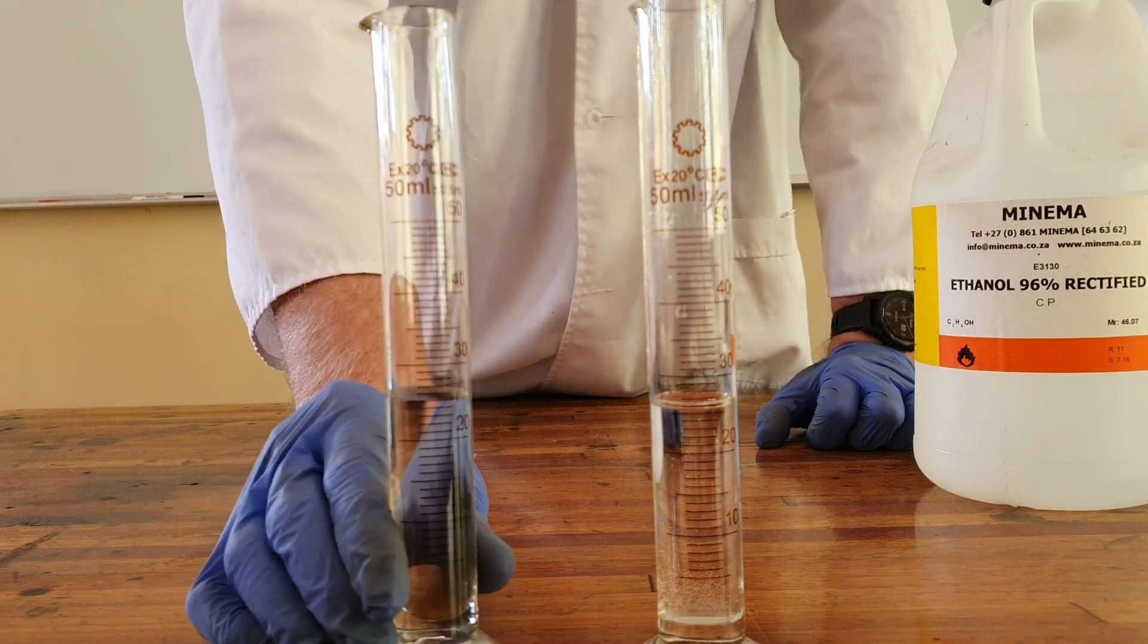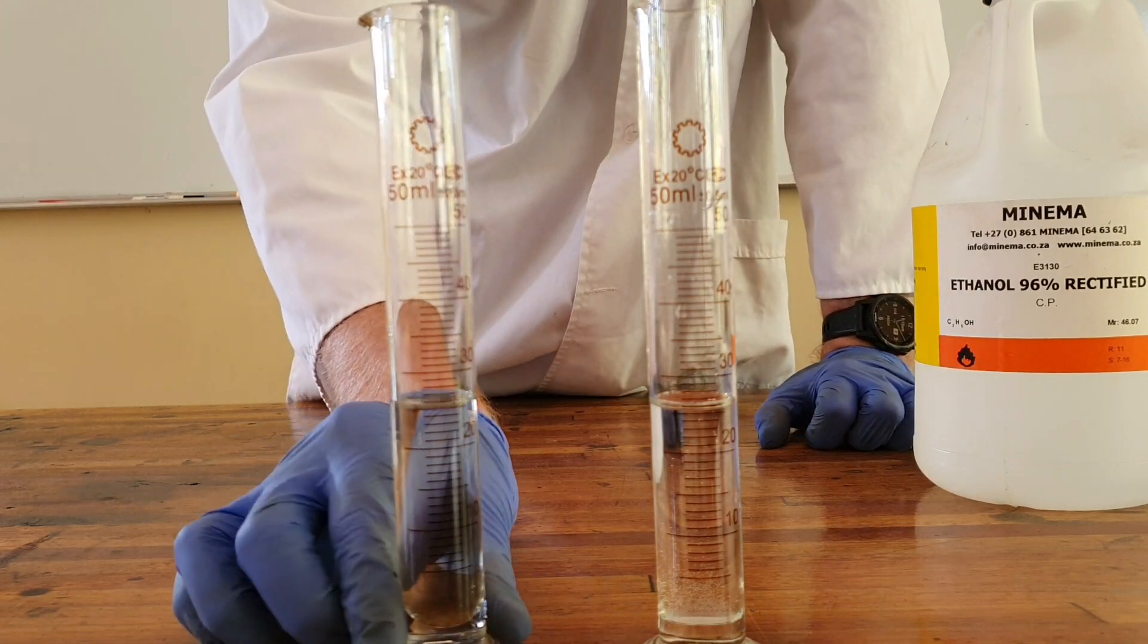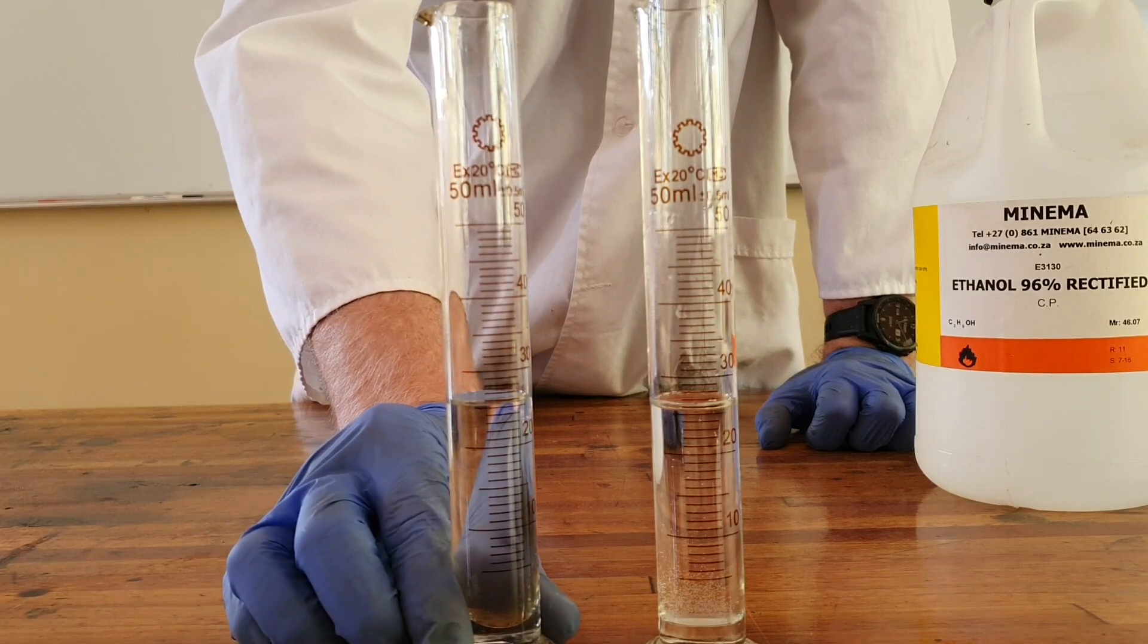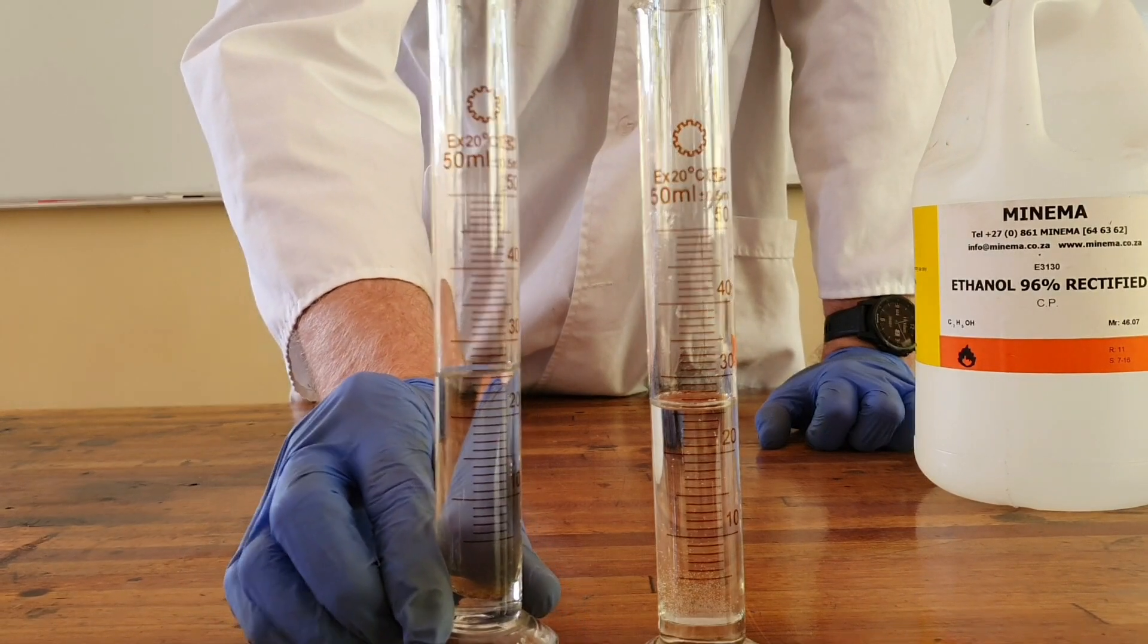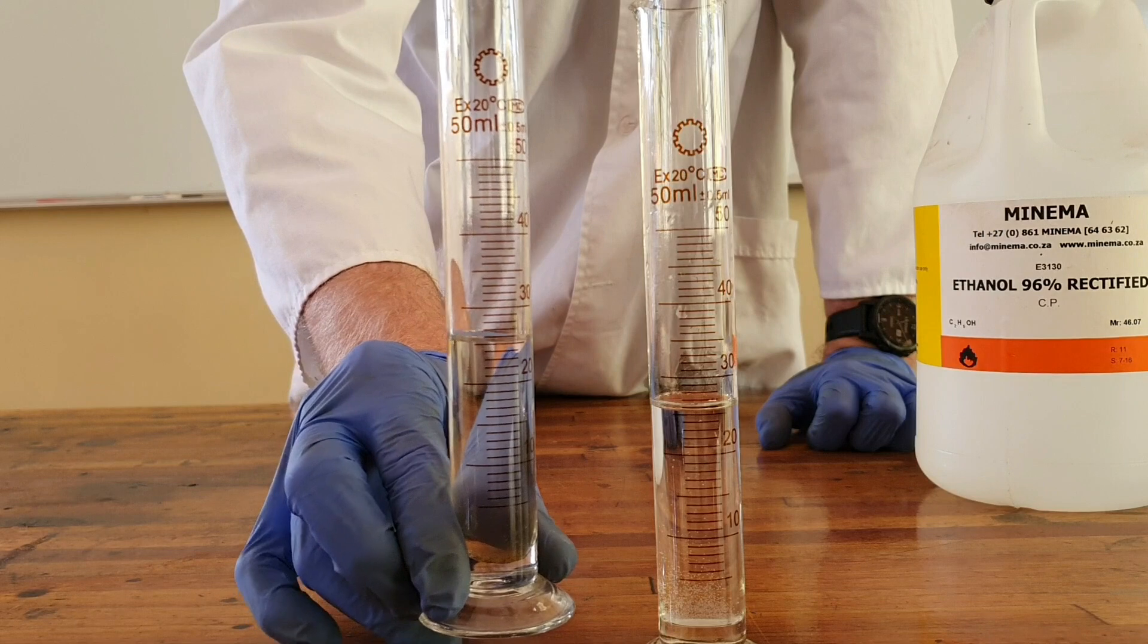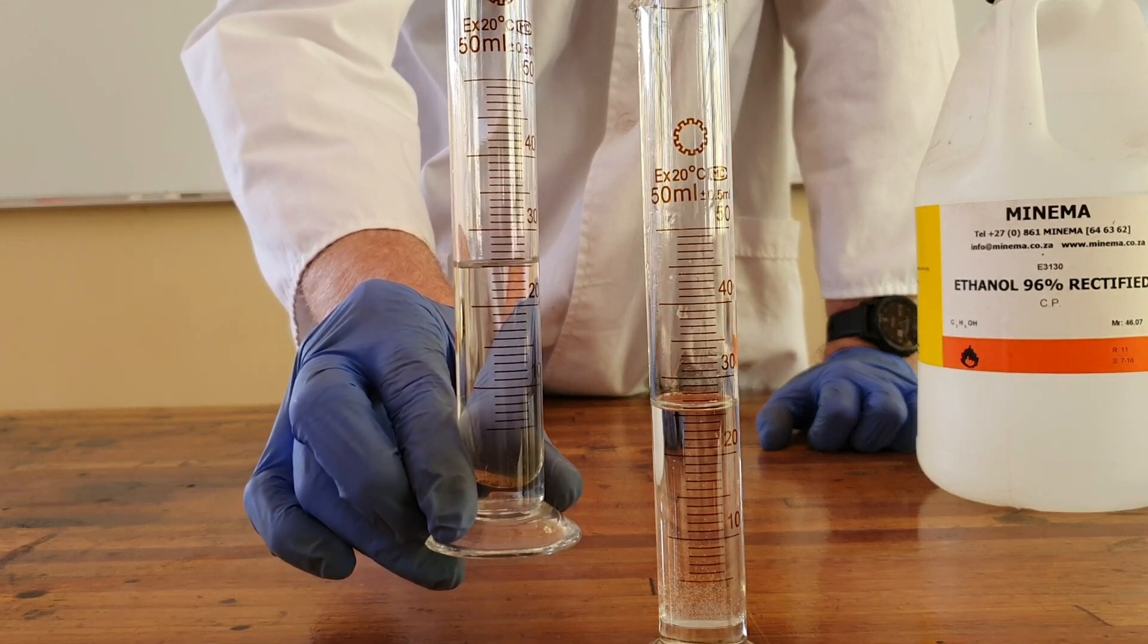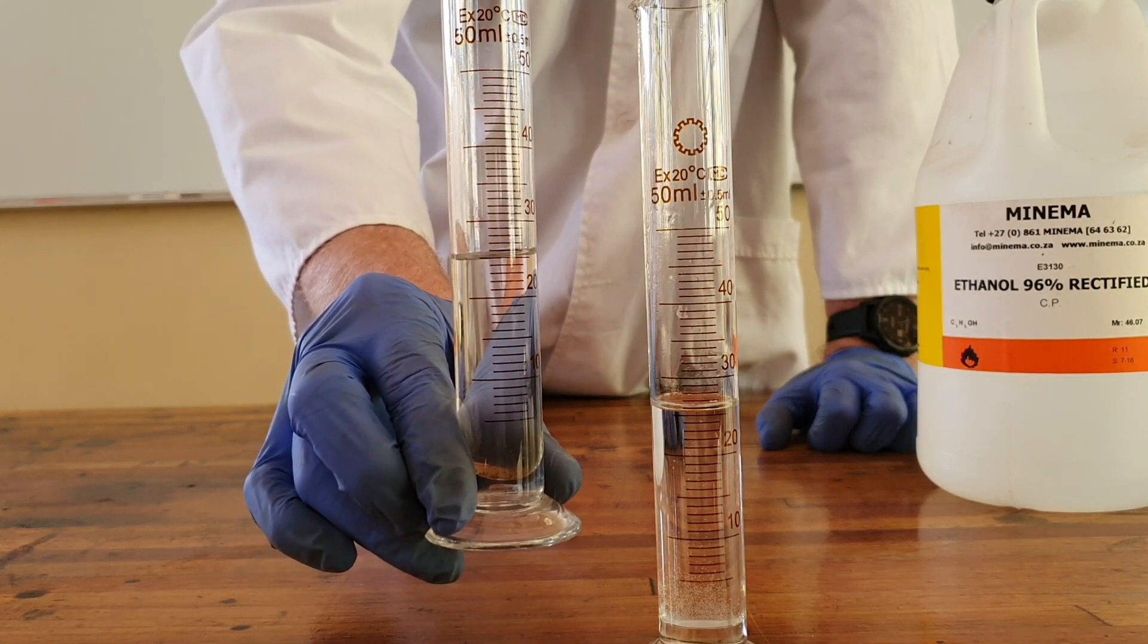In this hand I have ethanol, 25 milliliters. You can see that there is a meniscus that forms, that shape at the top of the liquid. And it is important to measure from the bottom of the meniscus.